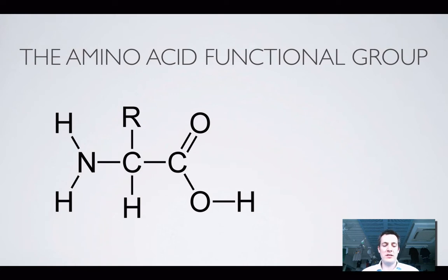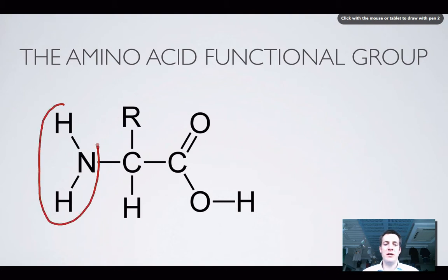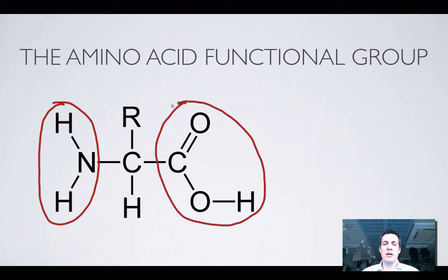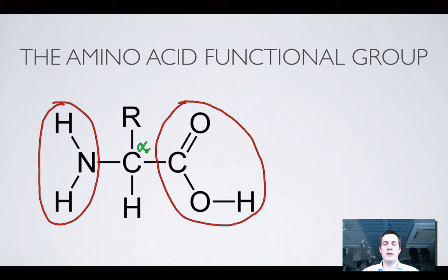The amino acid functional group is not really one functional group but two. Any molecule that has both an amine functional group and a carboxylic acid functional group is called an amino acid. There's a notation in organic chemistry which refers to the carbon next to a carbonyl carbon as the alpha carbon. The reason naturally occurring amino acids are called alpha amino acids is because the amino group is attached to that alpha carbon.